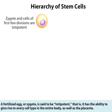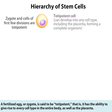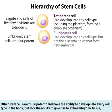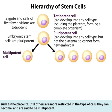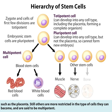A fertilized egg or zygote is said to be totipotent — that is, it has the ability to give rise to every cell type in the entire body as well as the placenta. Other stem cells are pluripotent and have the ability to develop into every cell type in the body but lack the ability to give rise to extra embryonic tissue such as the placenta. Still others are more restricted in the type of cells they can become and are said to be multipotent.